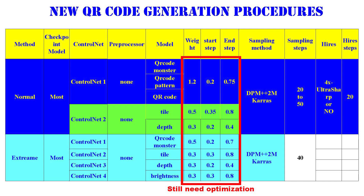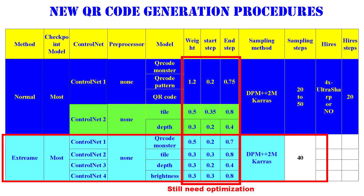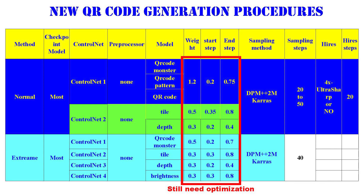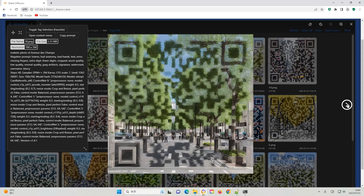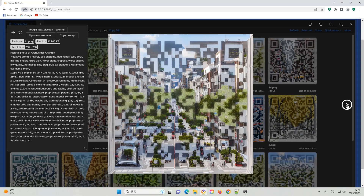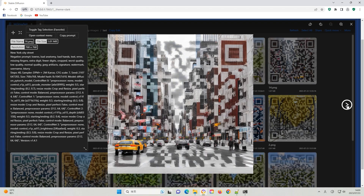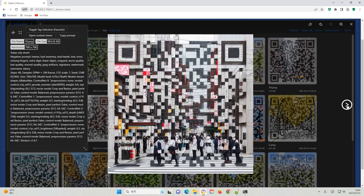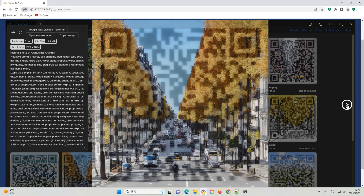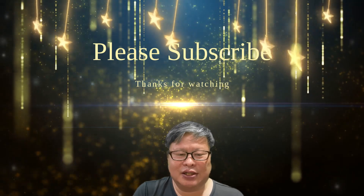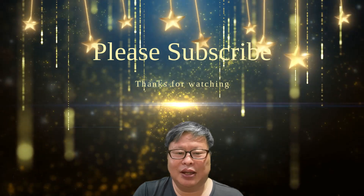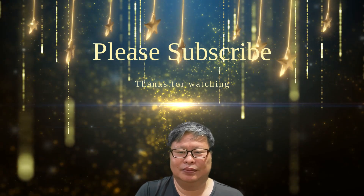In conclusion, I present a modified full ControlNet QR code generator. As you can see, all the weights are small and the success rate is nearly 100%, producing very beautiful QR code images. If you enjoy my content, please consider subscribing to my channel. Thanks for watching.